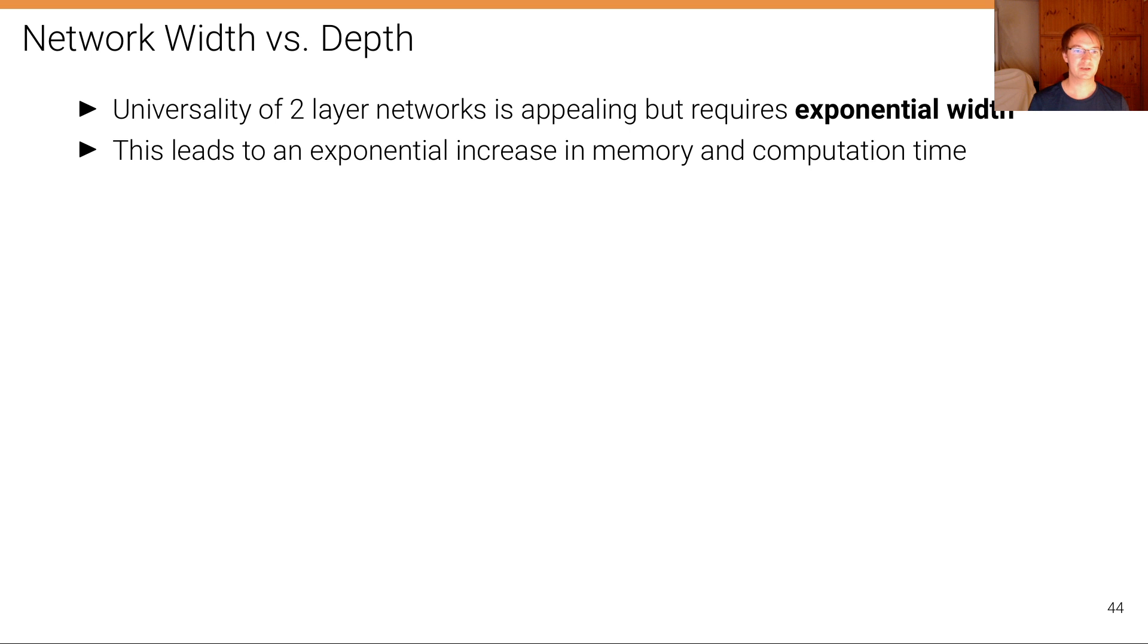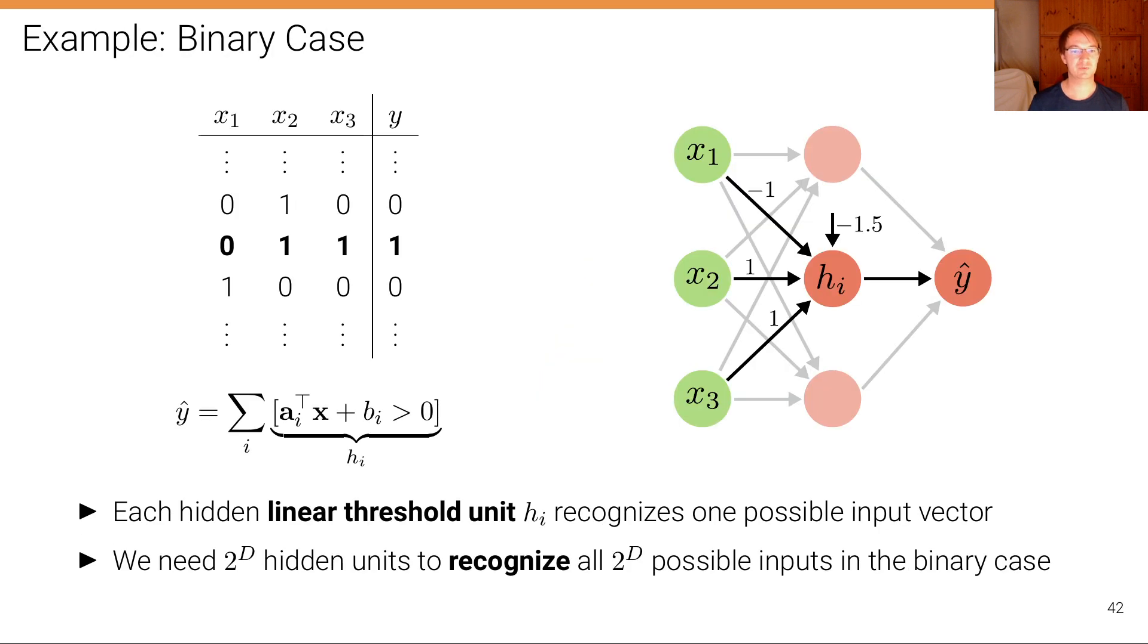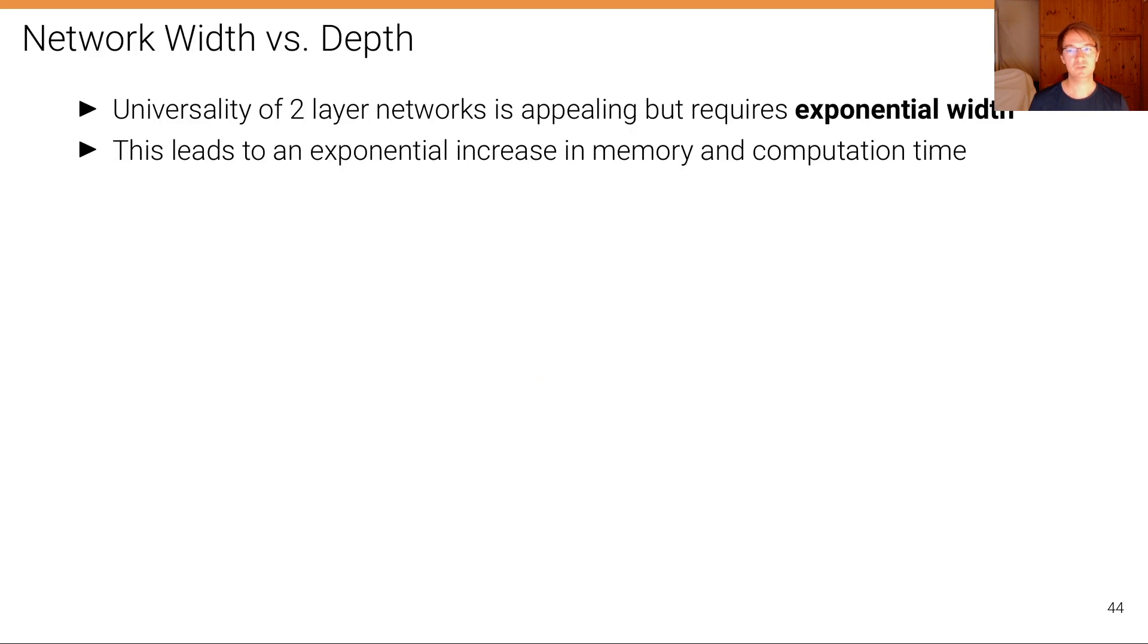This is also what happened here, right? We have simply defined one hidden unit that memorizes one specific input, and this is of course not what we want because we want to achieve good performance on the validation set, we want to achieve low test error, we want to achieve a high degree of generalization to the test set. So memorizing or simply overfitting doesn't really help us.